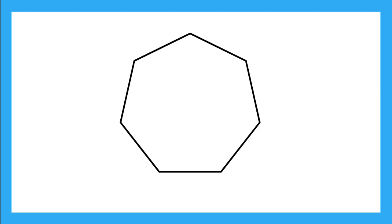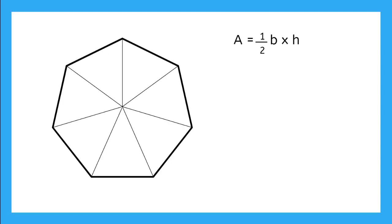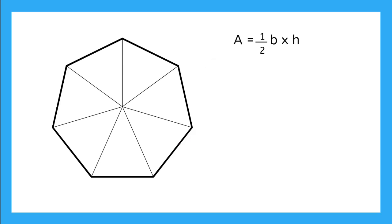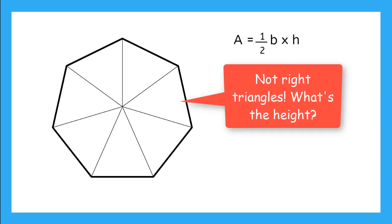Instead, I start at each vertex and draw a line to the center point of my shape. So now I have 7 triangles, and I do know how to find the area of triangles. Area equals 1 half the base times the height. But these are not right triangles, so what's the height of these triangles?